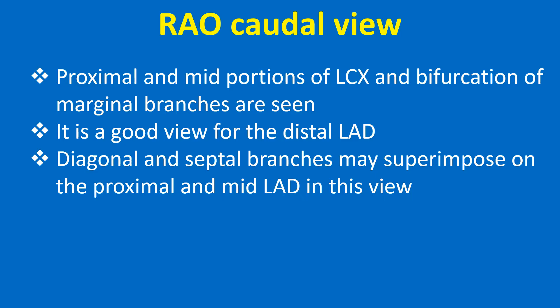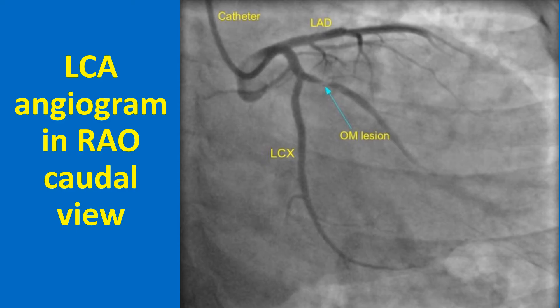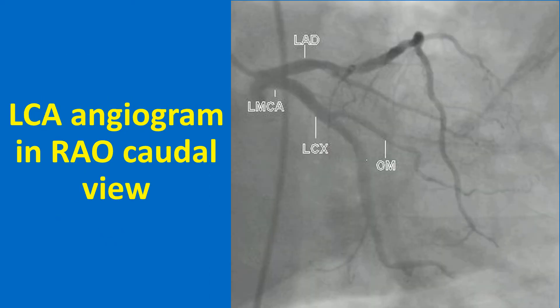Diagonal and septal branches may superimpose on the proximal and mid LAD in this view. A left coronary angiogram in RAO caudal view shows a tight lesion in the obtuse marginal branch of the left circumflex coronary artery, marked by a blue arrow in the proximal portion of the OM, which is a major branch of the LCX. In another case in RAO caudal view, the distal LAD is seen well, while diagonal and septal branches overlap the mid LAD as mentioned.